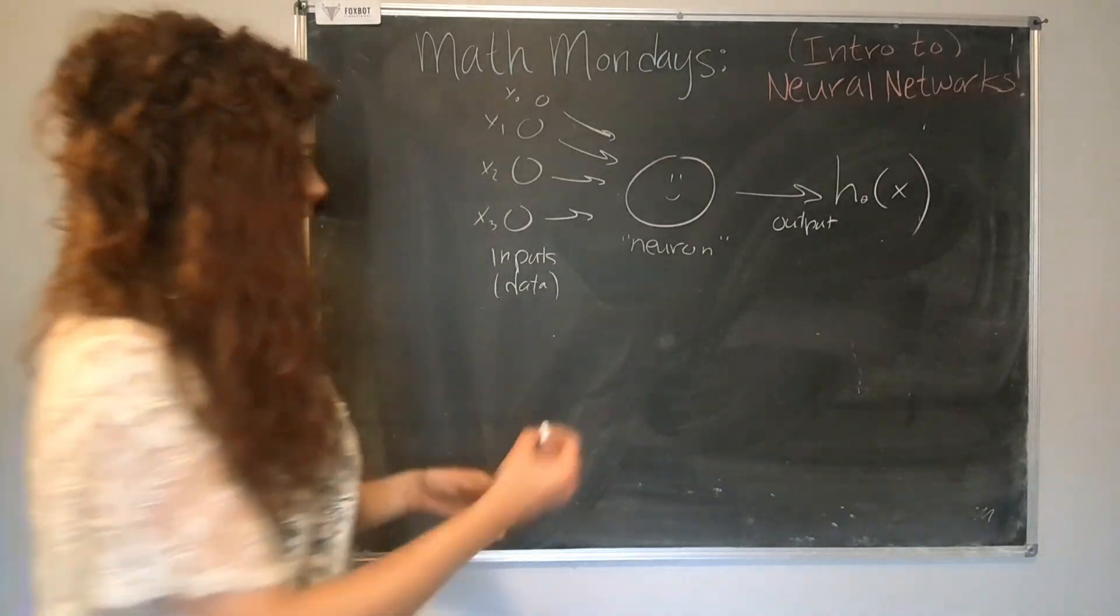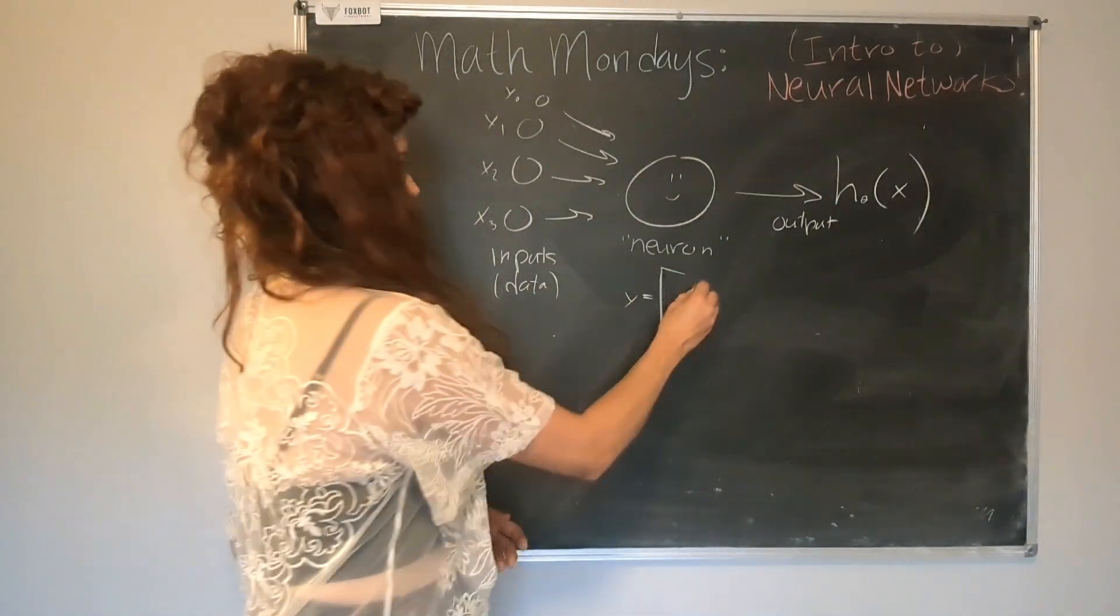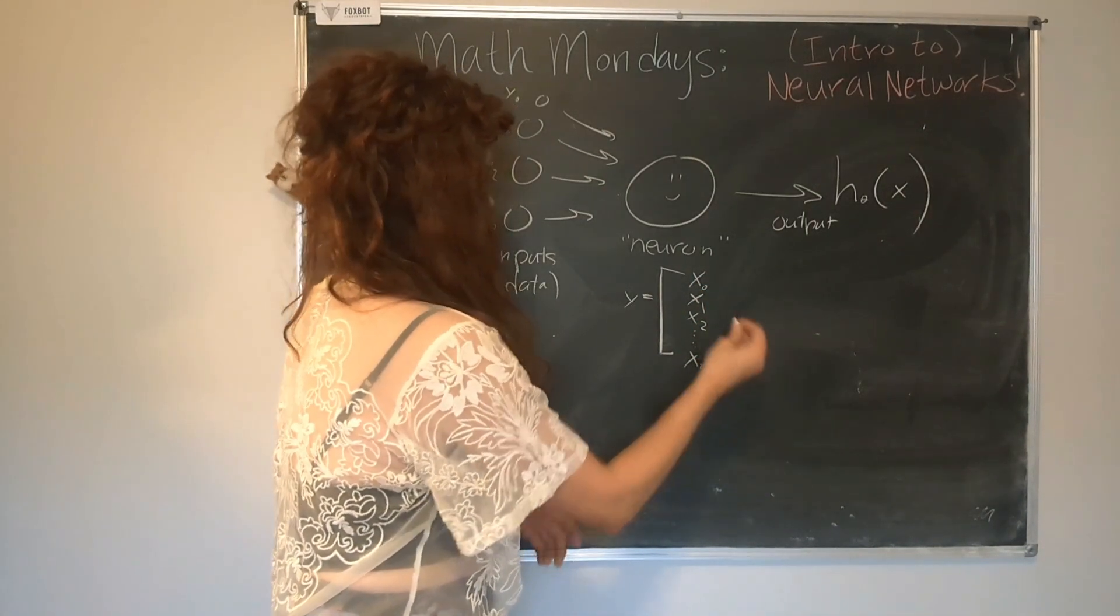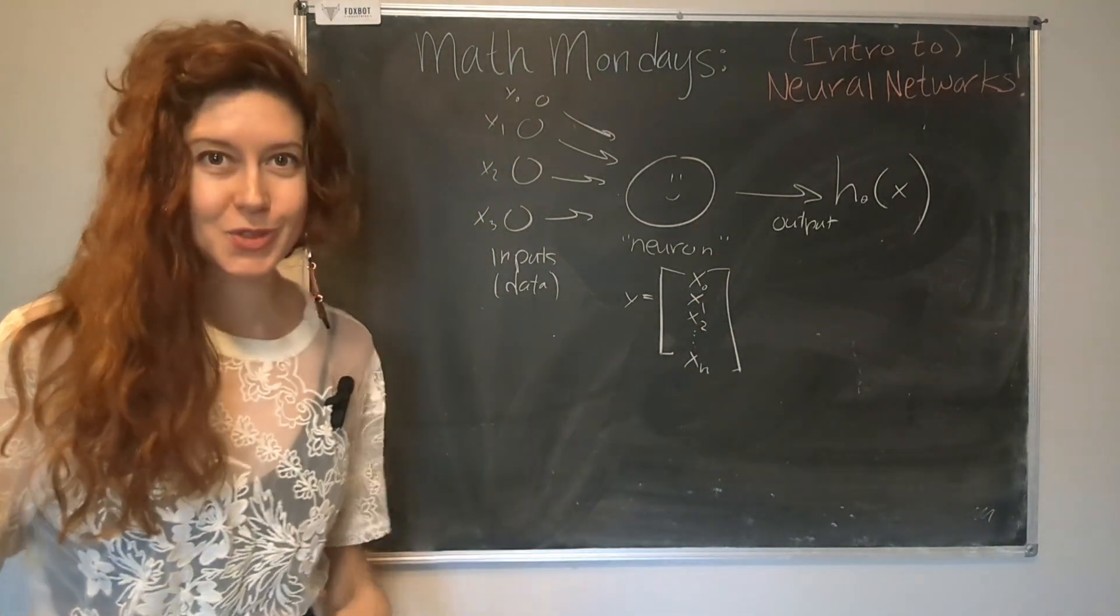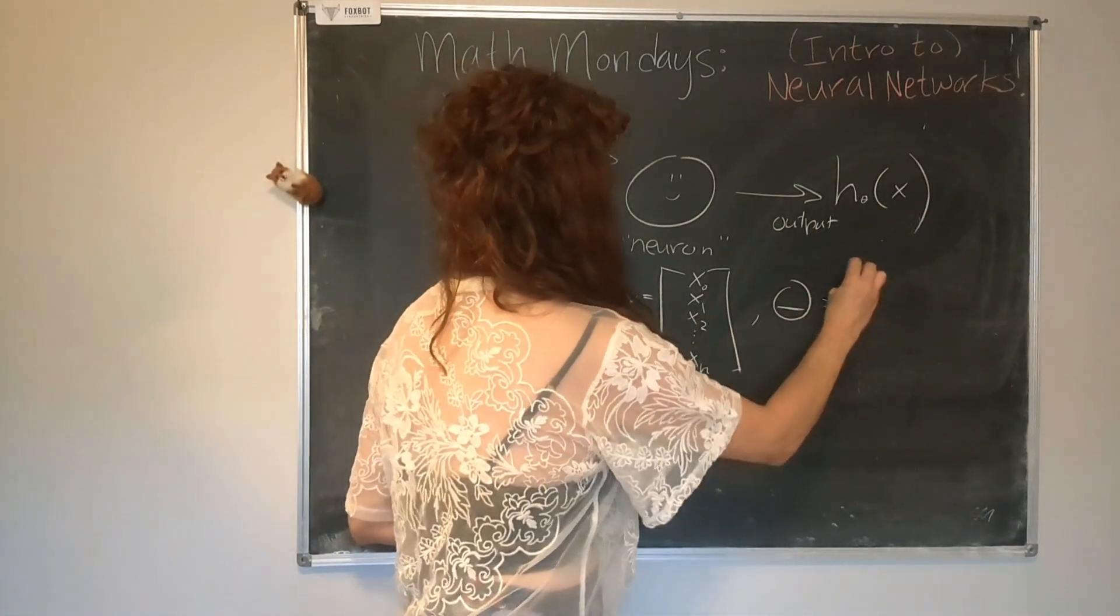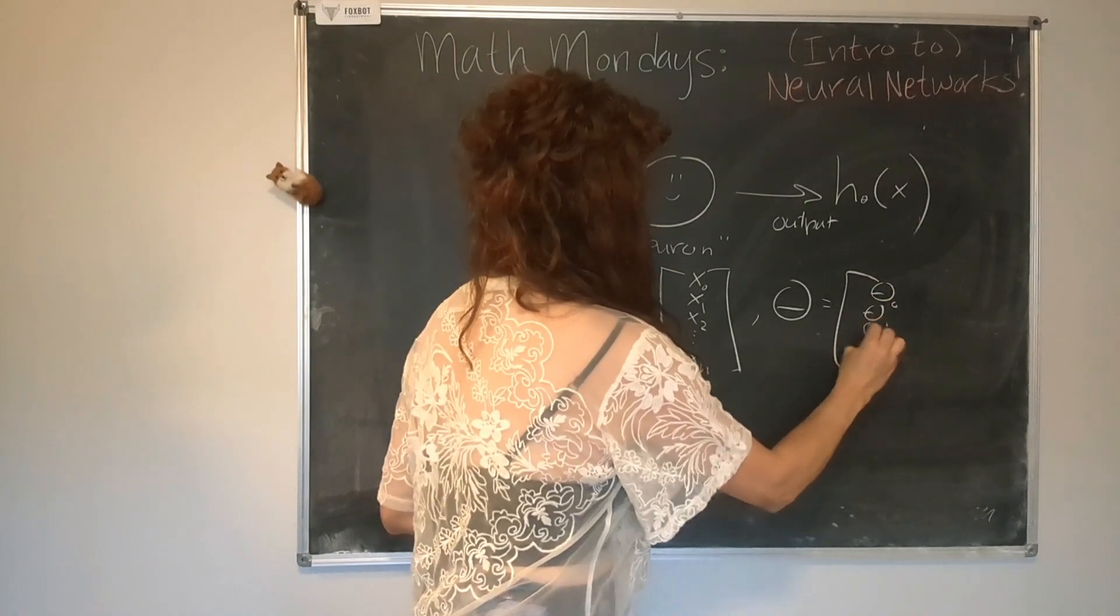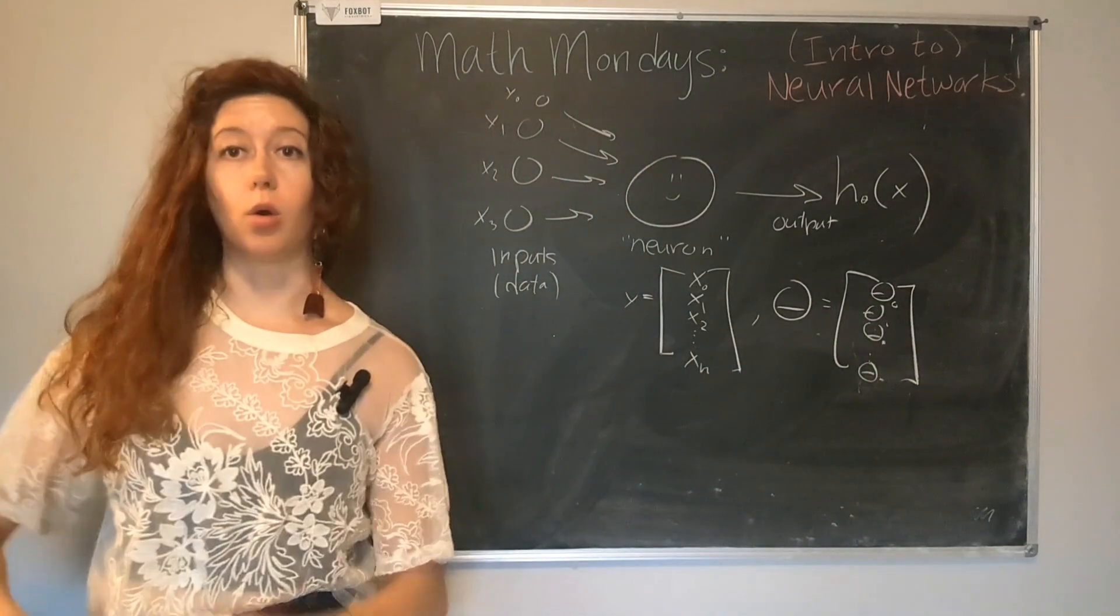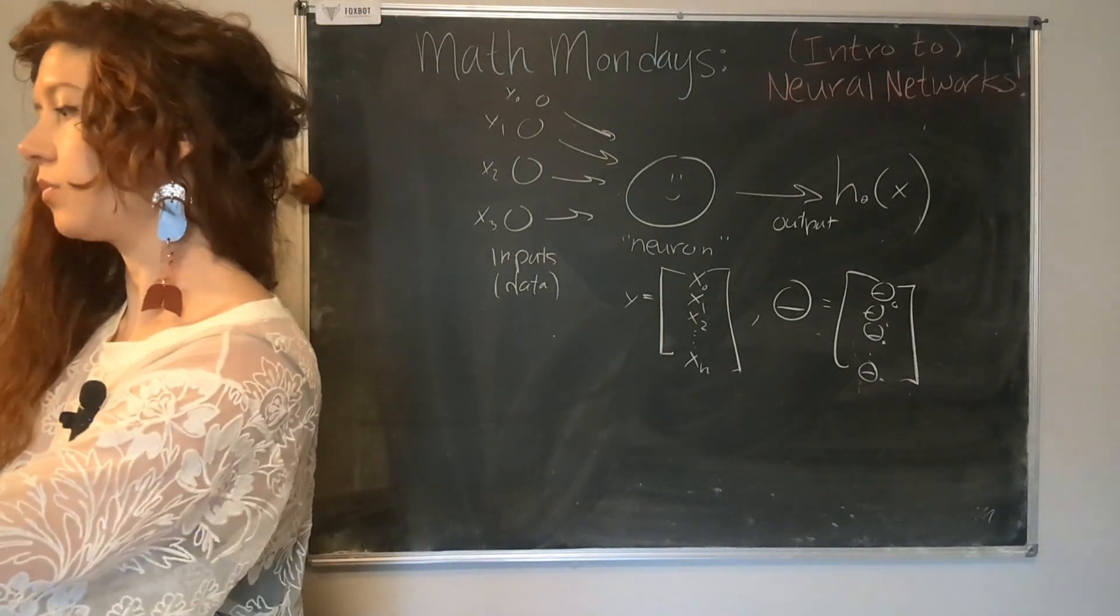So our inputs are going to be of a form, like a matrix like this. So you have x0, x1, x2, all the way to however many features you have or pixels you have in your image. And then our parameters are similarly going to be a matrix of parameters. So theta 1, theta 2, theta n, depending on how large of a formula you have coming out the end.